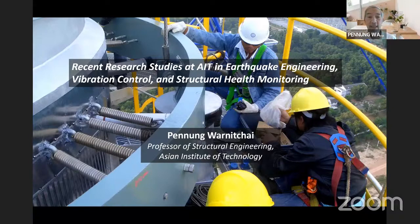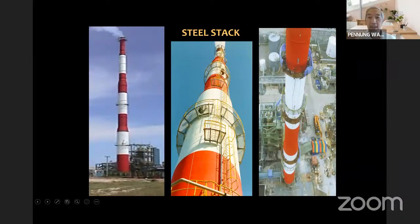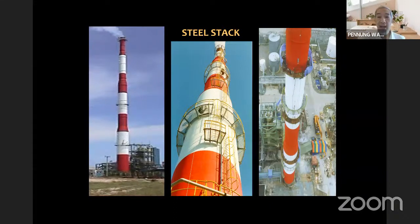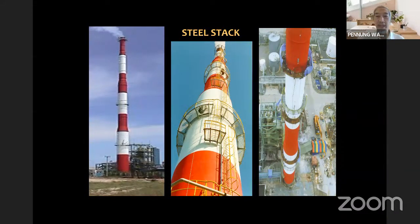Let me start by showing this slide — a very tall steel stack. This is a real one in Rayong, a province not far from Bangkok, the capital city of Thailand. In Rayong, there are many industrial complexes, and this is one of the tallest steel stacks in that area. The structure is tall and is a vertical cantilever system. This type of structure is very flexible with very low lateral stiffness, and it can be easily shaken by dynamic wind effects.